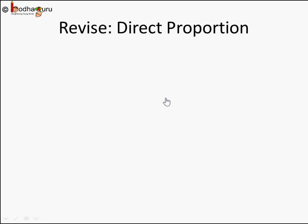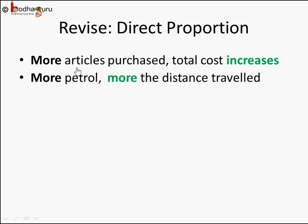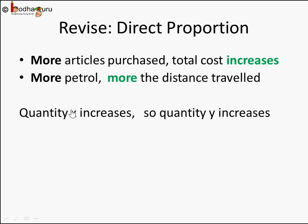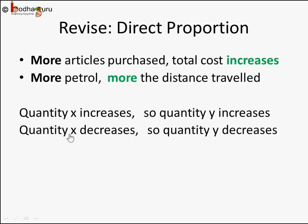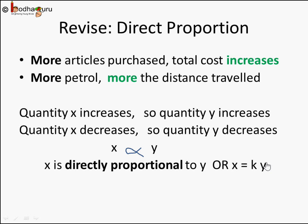In our last lesson we learned about direct proportion. Whenever two quantities — for example, number of articles and the cost, or the number of litres of petrol and the distance travelled — whenever quantity X is increasing and quantity Y also increases, and when X decreases, Y also decreases, we say X is directly proportional to Y, or X is equal to KY. More the petrol, more the distance travelled. More the number of articles you purchase, more is the total cost.